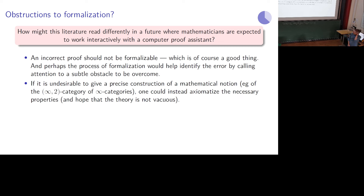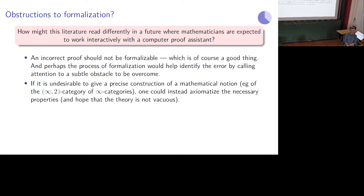The second example was the post-rigorous use of infinity categories by Lurie in his infinity topoi preprint, and by much of the literature — mathematics being developed heuristically as opposed to using a precise definition. In this case, it really does seem undesirable to give a precise construction of the mathematical notion, based on the choices made by practitioners. What's needed is maybe really the totality of infinity categories — the infinity-two category. One strategy could be to axiomatize the necessary properties and then hope the theory is not empty, that there are models.